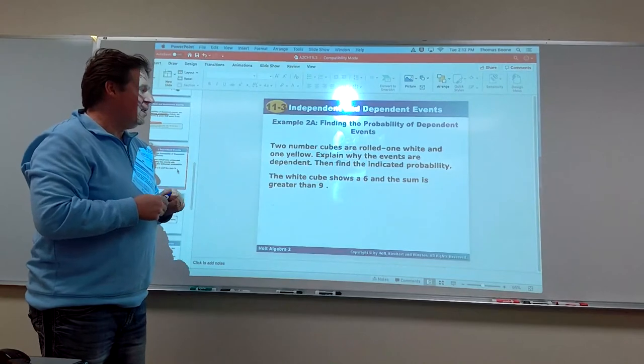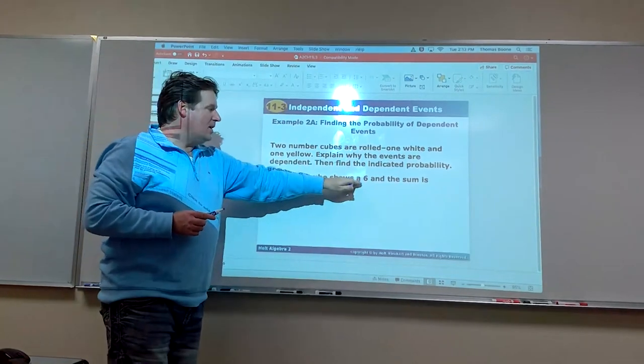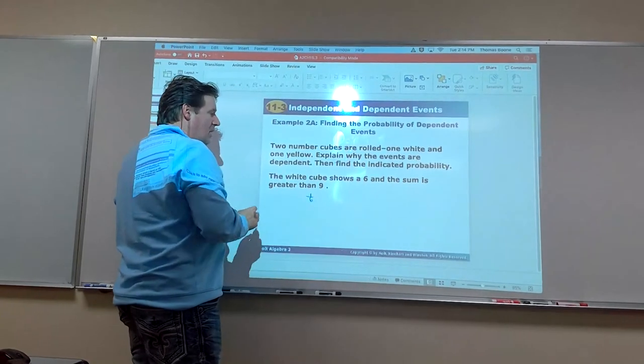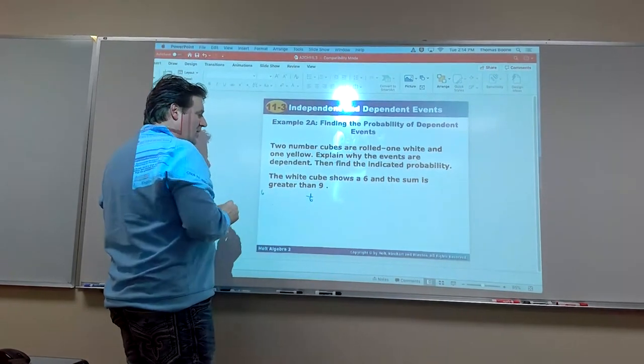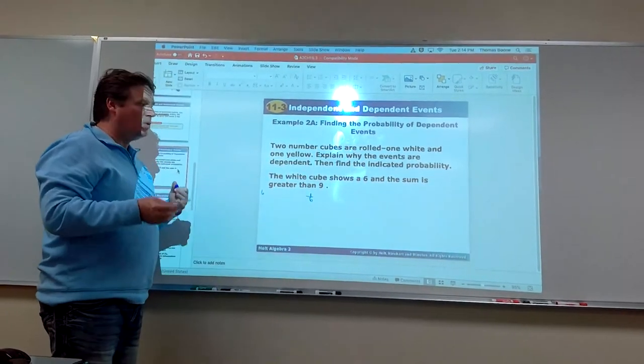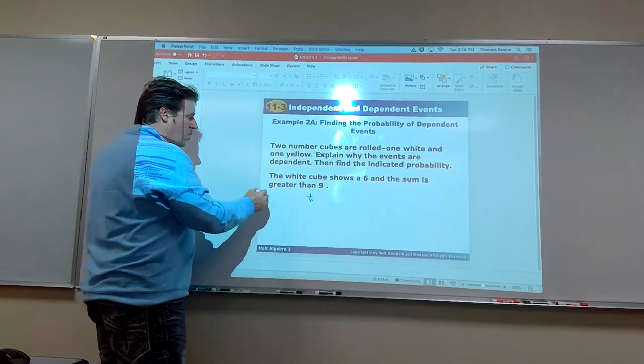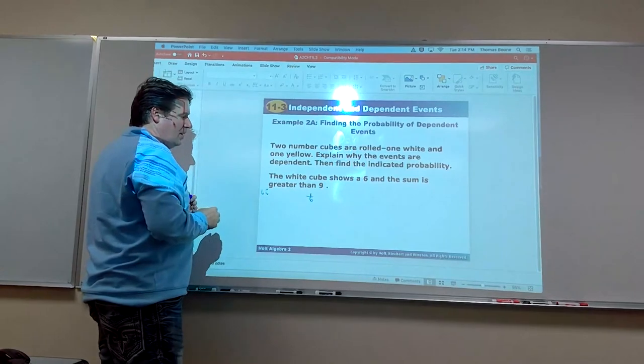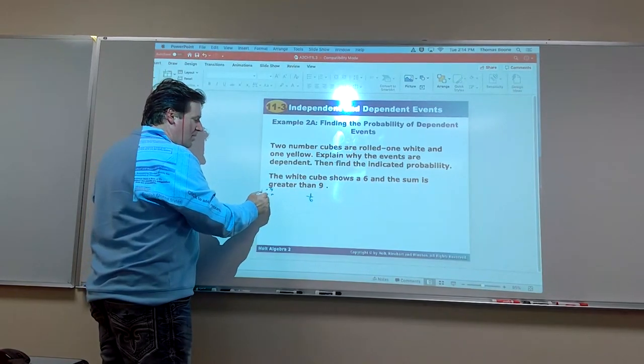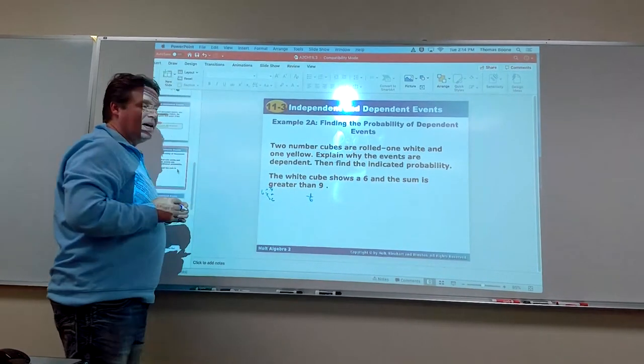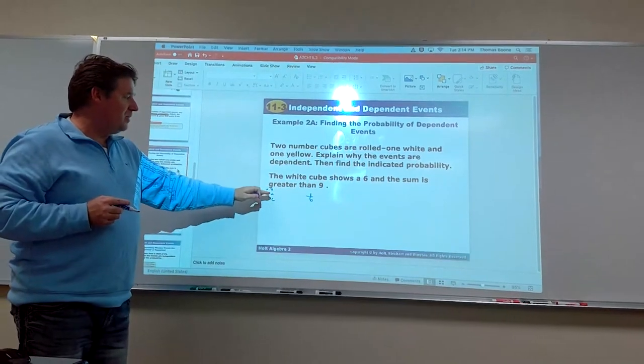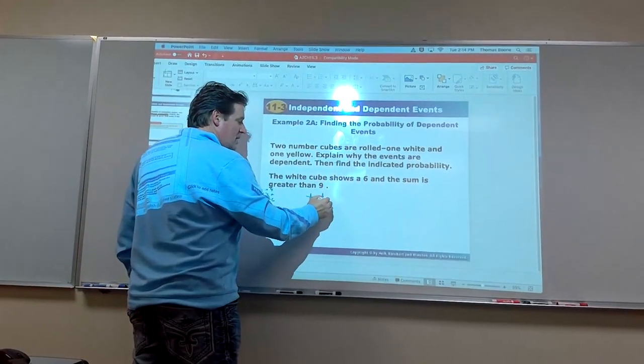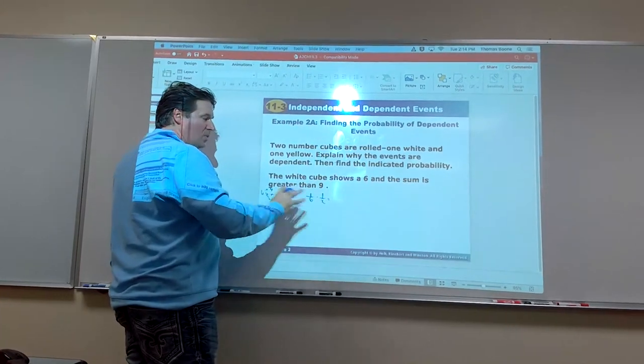So that makes the difference. So how do you find the probability? Well you take the probability of A, so the white cube shows a 6. Well that's 1 out of 6. Alright, now if the white cube is a 6, let's think. What would we have to roll on the second die in order to get a sum greater than 9? Well we'd have to have a 4, a 5, or a 6 is what we'd have to have. So the probability of rolling a 4, 5, or 6, again, would be 1/2, or 3/6.